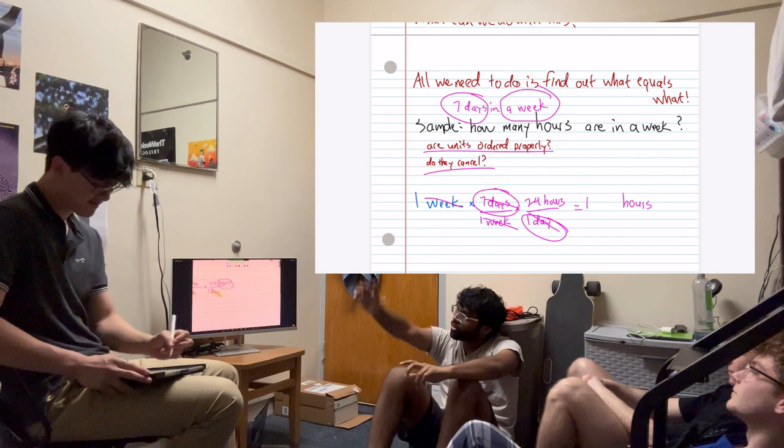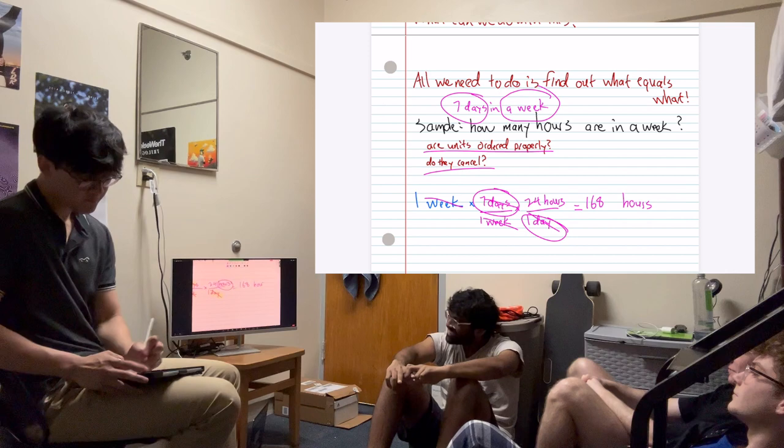So now we multiply 1 times 7 times 24. And who knows what that is? Yes, sir. 168. 168. Honestly, I'm going to take your word for it. But as you guys can see, that's all it is to convert from a week to hours.